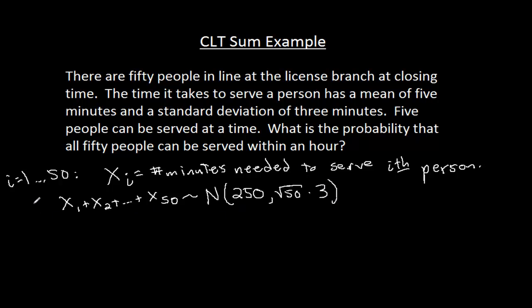I do want to emphasize again, we're making some assumptions. We're making the assumption that these random variables are independent and identically distributed. Any time we do a statistical argument, we have to make assumptions like this. Unfortunately, a lot of times, we can't be 100% sure that those assumptions hold, but we have to start somewhere. The square root of 50 times 3, that is about 21.2, just for your information.